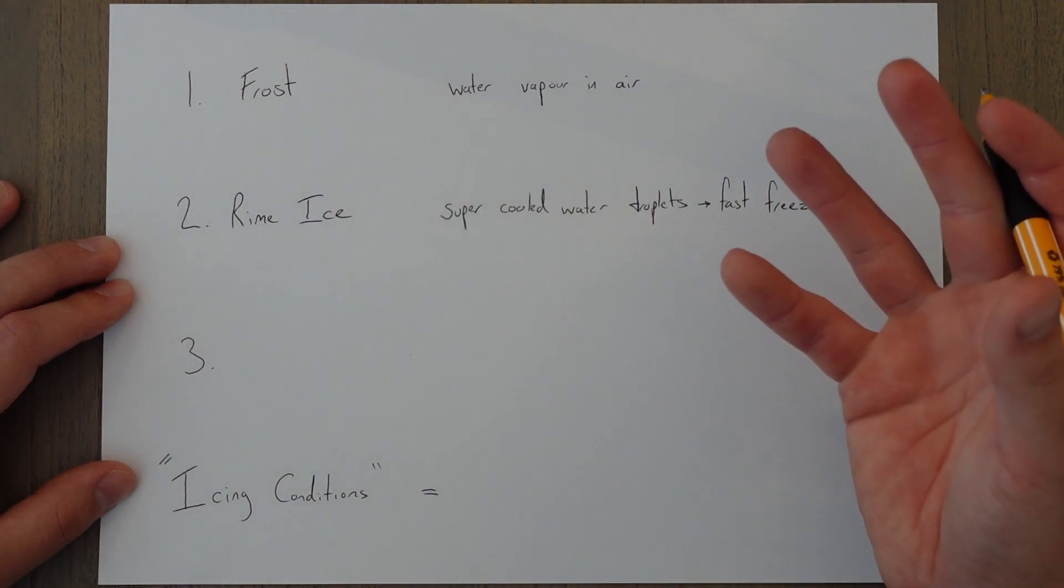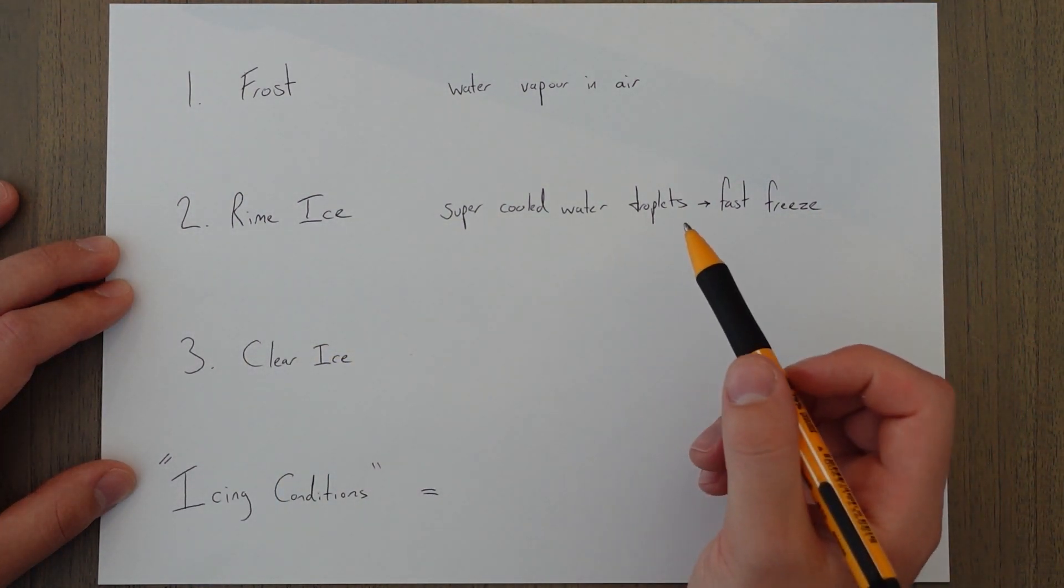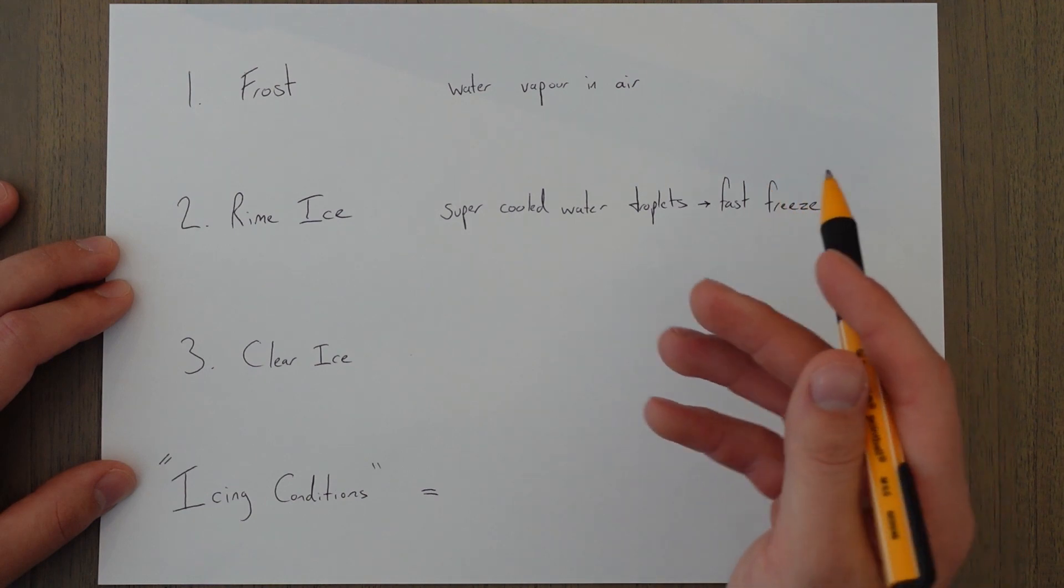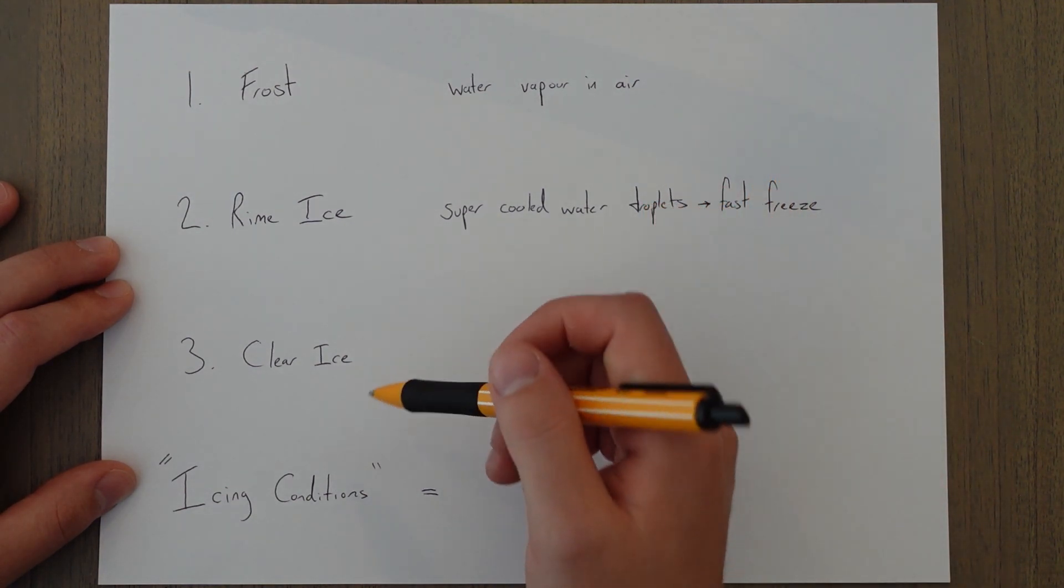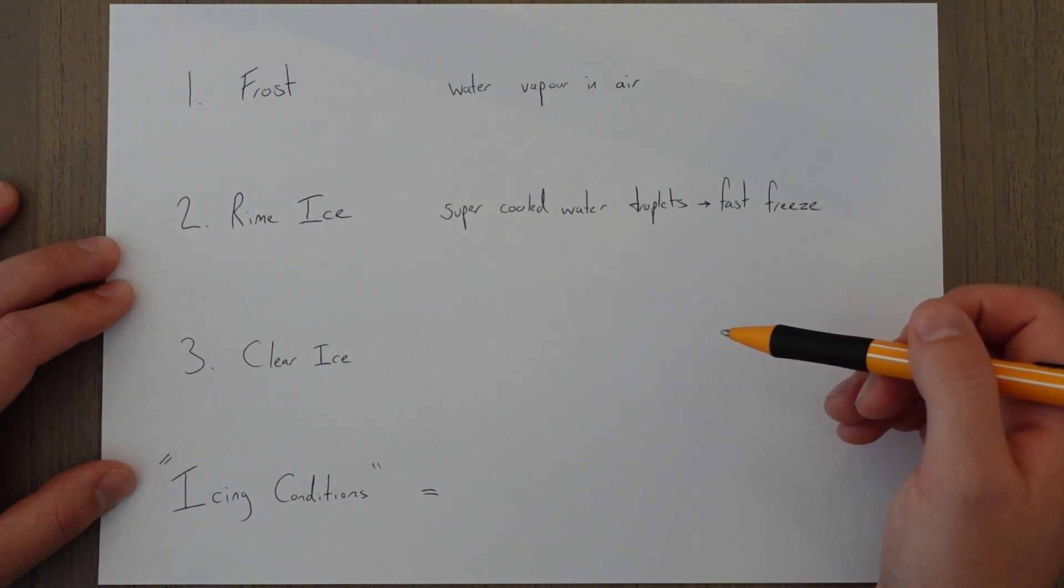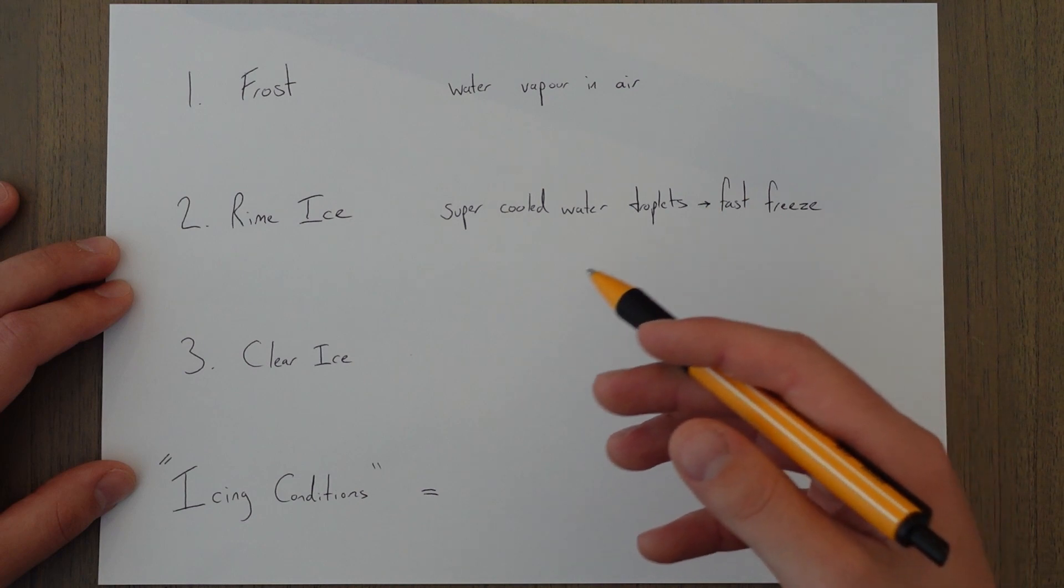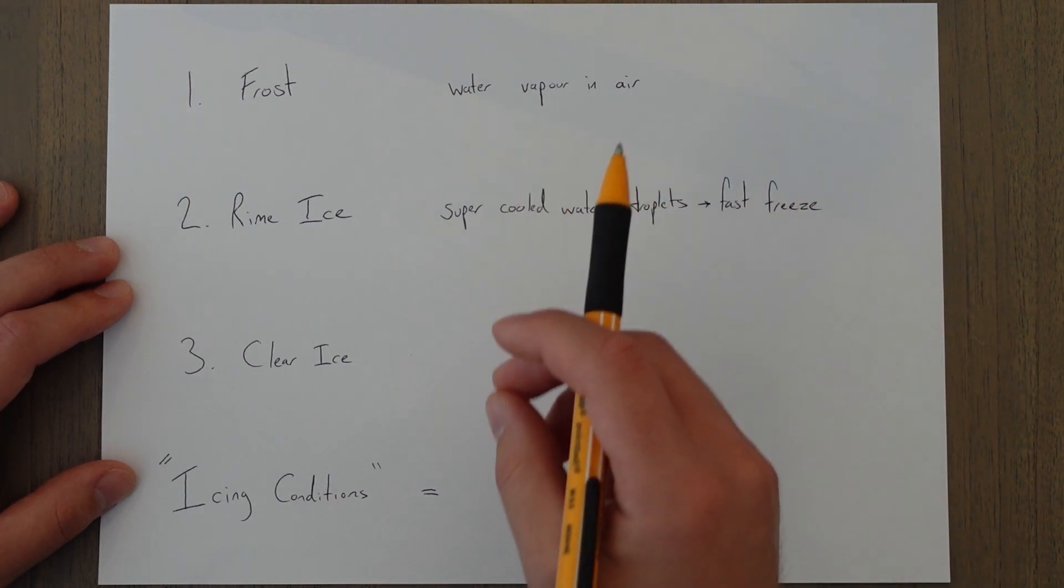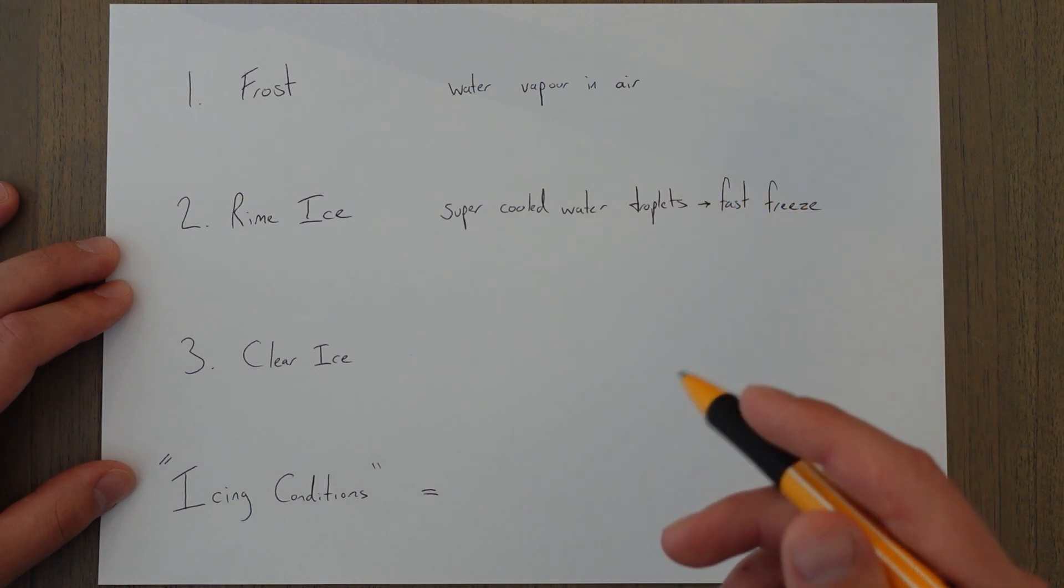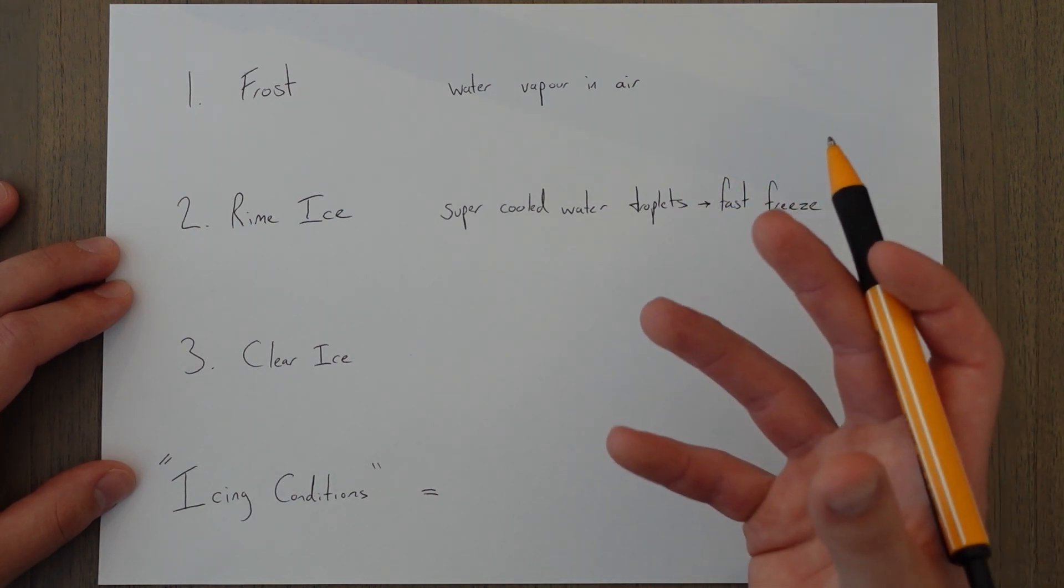The third type is clear ice and this is formed by super cooled water droplets once again, but it's when they don't freeze instantly on impact and they actually flow rearwards over the surface and freeze at a slower rate. This creates a more uniform structure within the crystals of the ice particles and that leads to a clear ice which covers a large area and it's quite strong and hard.